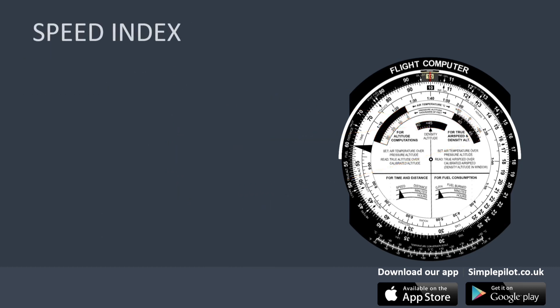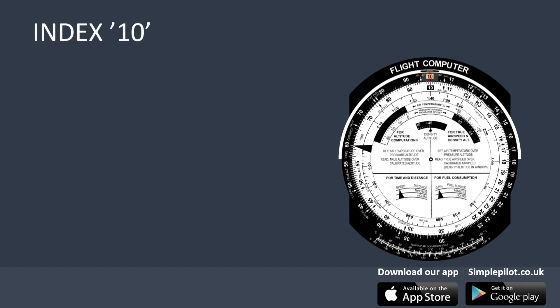The flight computer also has some special markings used in multiple exercises. One of these markings is the speed index, which is a triangular-shaped mark located on the middle and inner scales that represents the number 60. We will see how to use it later. Another important marking is the index 10, which is a mark highlighted with a 10 on the middle scale. Now that we know the basic parts, we must understand a key aspect regarding the interpretation of these scales, which is magnitude.